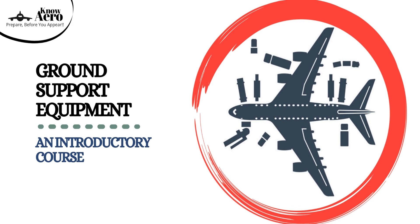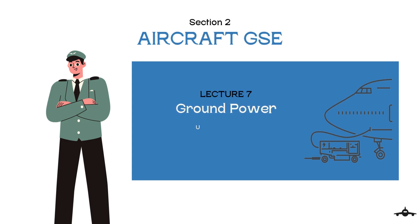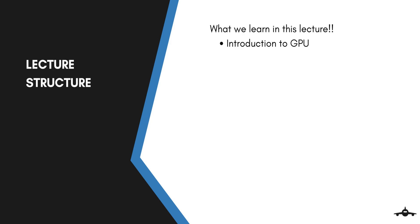Welcome back to an introductory course on ground support equipment. In this lecture we will talk about the machine responsible for supplying electrical power to the aircraft when on ground. This machine is known as ground power unit. We will begin with an introduction to ground power unit, then we will discuss why we need it and what is the purpose of GPU.